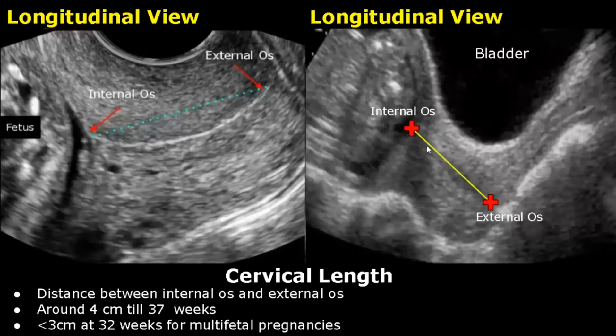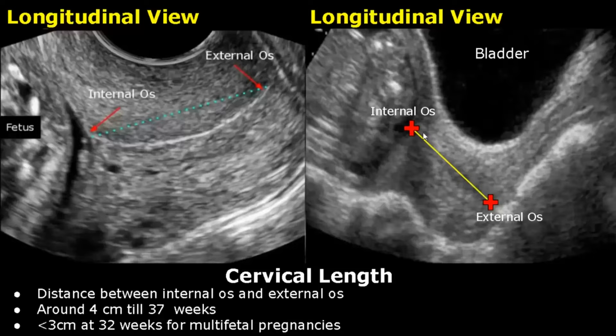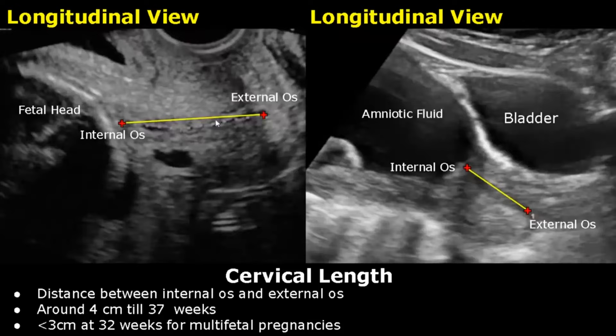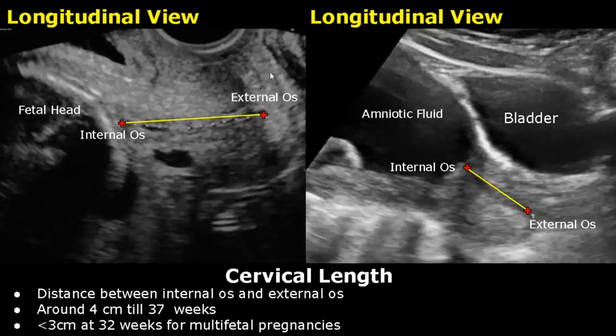Cervical length can also be taken in a transabdominal view, but it is not as accurate because a full bladder often leads to an increased value. This is the internal os where one caliper is placed, and this is the external os where the other caliper is placed. Here are more images showing measurement of cervical length in transvaginal and transabdominal approaches, with the bladder and amniotic fluid visible.